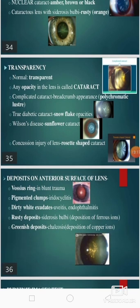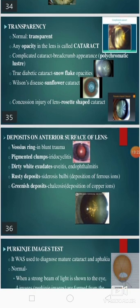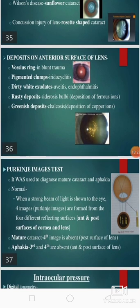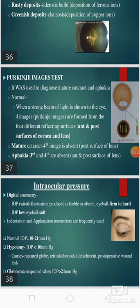We should see the transparency of the lens — normally it is transparent; if there is an opacity it is called cataract. There may be deposits on the anterior surface of the lens: Vossius ring in blunt trauma, pigmented clumps in iridocyclitis, dirty white exudates, rusty deposits, or greenish deposits. Then the Purkinje images test is used to diagnose mature cataract and aphakia. Normally when a strong beam of light is shown to the eye, four images are formed from four different reflecting surfaces. In mature cataract the fourth image is absent, and in aphakia the third and fourth are absent.